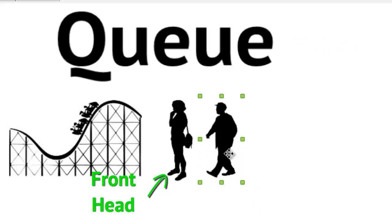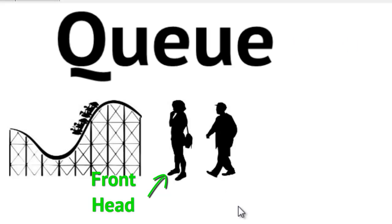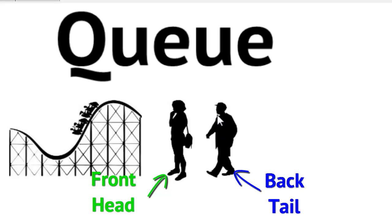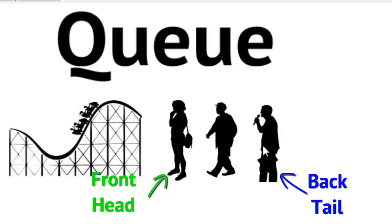Then a gentleman comes along interested in riding the roller coaster, and he has now been enqueued. This changes the size of our queue from one to two. The lady is no longer the back of the queue — she's still the front or head of the queue — and this gentleman is now the tail or back of the queue. Then another person comes along and is enqueued. He has a microphone, so maybe he's singing or talking on a loudspeaker. He becomes the new tail or back of the queue, while the lady remains the front or head, and the gentleman in the middle doesn't have a specific name.